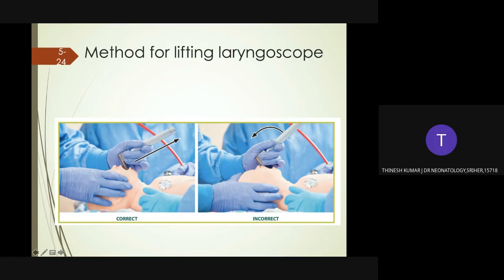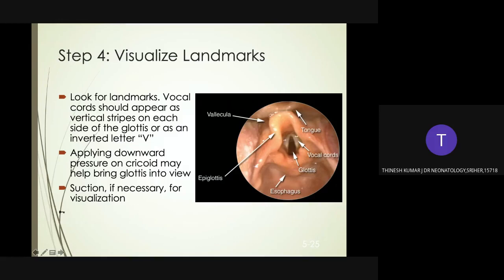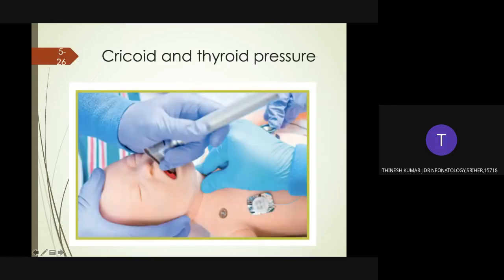The correct method is to lift in the direction of the laryngoscope handle — do not use a rocking motion. When the glottis appears at the top of your view, an assistant can help bring it into view by applying gentle pressure on the baby's thyroid or cricoid cartilage downwards and towards the baby's right. Suction if necessary for visualization.